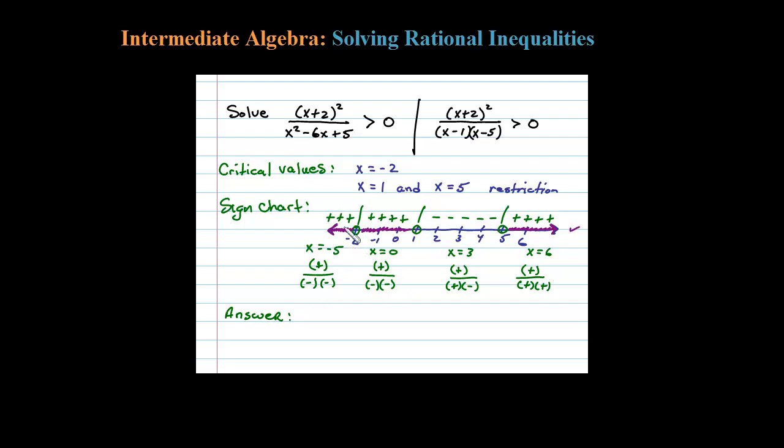that -2 is not included, so for this interval we have from -∞ up to -2 not included—round parentheses—union, not included, -2 up to 1 round parentheses, union this third interval here from 5 out